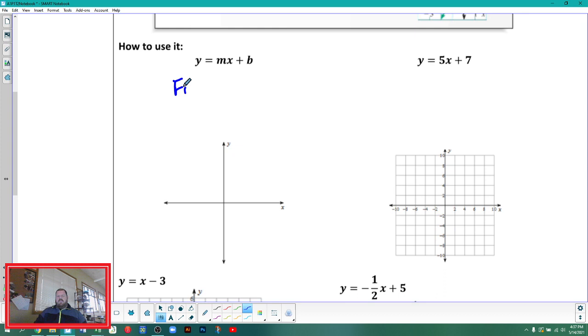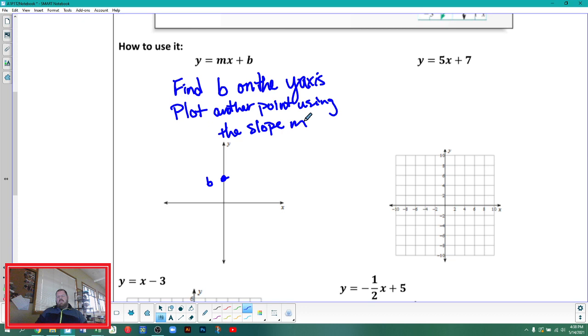Find b on the y-axis. So let's say b is right here, and we want to put a point there. Then we'll plot another point using the slope m, and then we'll graph our line.